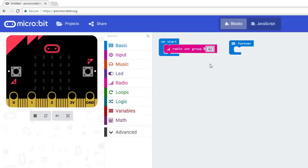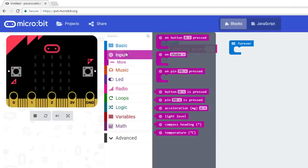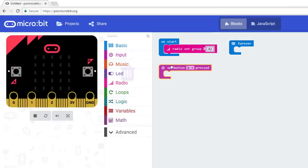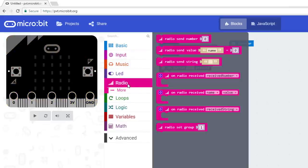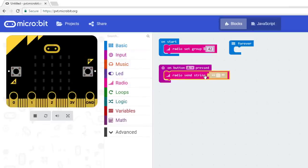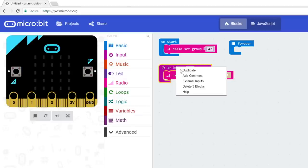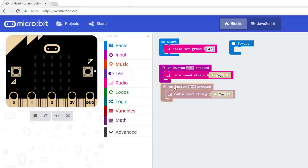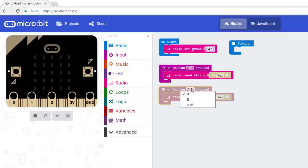Drag an On Button A pressed from input to your work area. From radio, snap Radio Send String to On Button A pressed. Type Yes in the string box. Right-click On Button A pressed and select Duplicate. In the copied block, change A to B and change Yes to No.